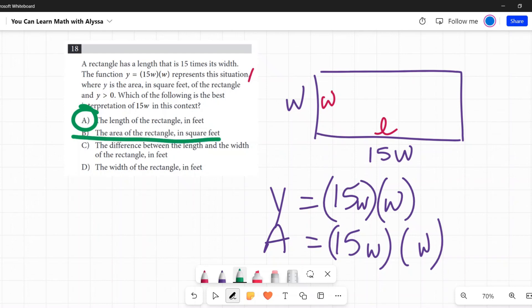B, the area of the rectangle in square feet. Nope. We already know y is the area in square feet. C, the difference between the length and the width of the rectangle in feet. Nope. The difference would be 15w minus w or 14w. And D, the width of the rectangle in feet. No, we're told the width is just w.